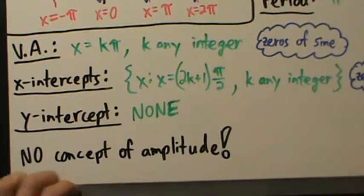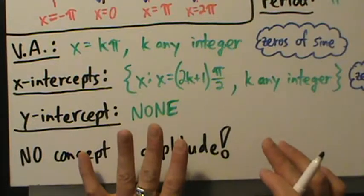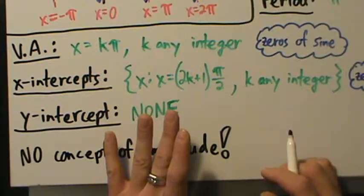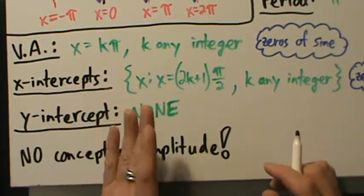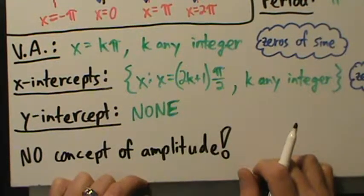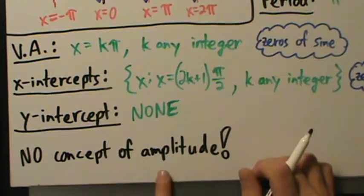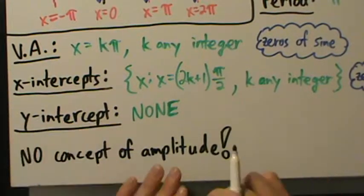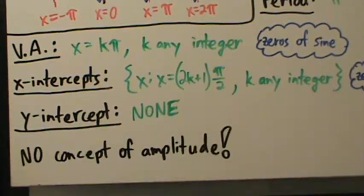Similarly, it doesn't really make sense to talk about phase shift with cotangent. If you use the term, people will know what you mean, but it's best to avoid it and just say horizontal shift instead. Phase shift is generally reserved for waves like sine and cosine. With amplitude, it simply does not apply to cotangent at all — there's nothing to talk about there.